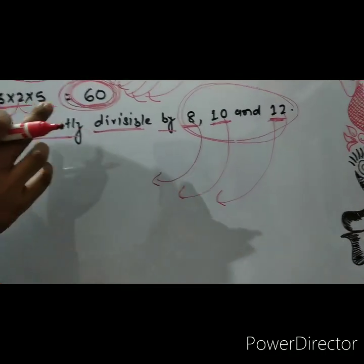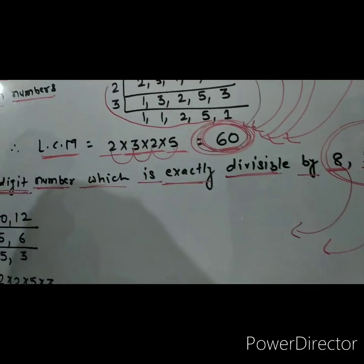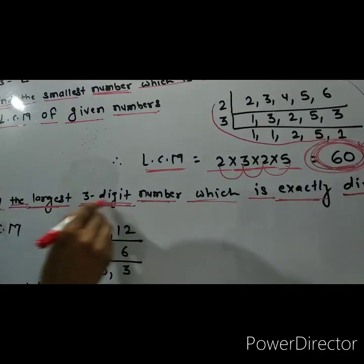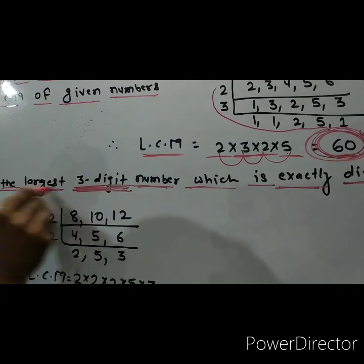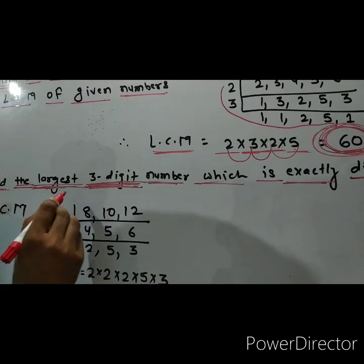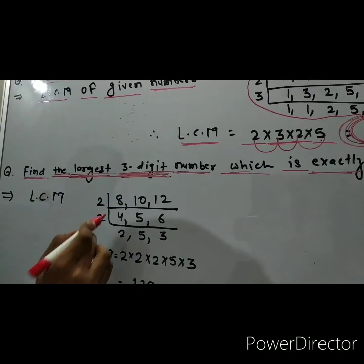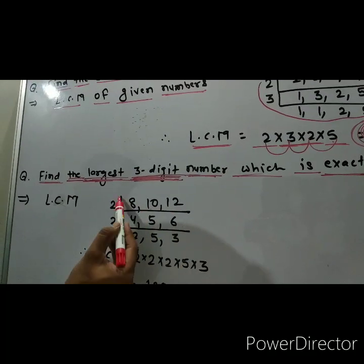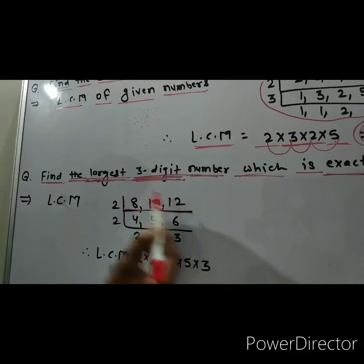But now, keep one thing in your mind. You have to find the three-digit number which is largest. So first we have to find the LCM here. First we write 8, 10, and 12 and make a box like this.